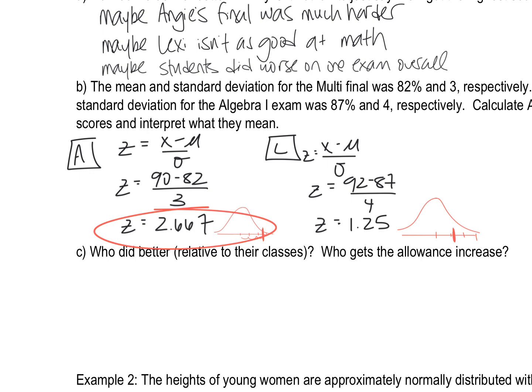But just keep in mind, she happened to have the lower score overall. Even though she got a 90 and Lexi got a 92, it's unfair to just compare those. It's not apples to apples. That is why we have the Z-score formula. So I'm going to write a little bit of an interpretation off to the side just so you can get these things into your notes.